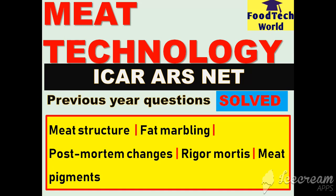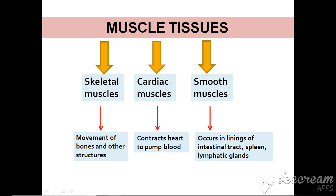At the end of the video we will discuss ARSnet previous year questions regarding these topics, so please watch till the end. Meat is an animal flesh which is eaten as food. There are three types of muscle tissues: skeletal muscles, cardiac muscles, and smooth muscles.